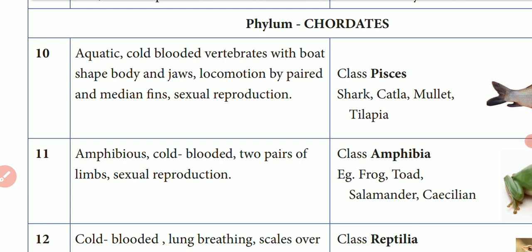Chordates means presence of backbone animals. There are five divisions, five subclasses.